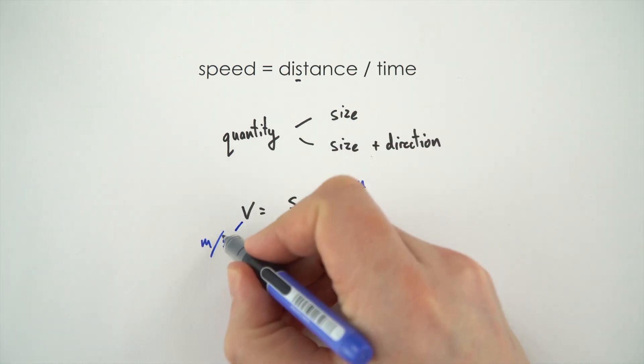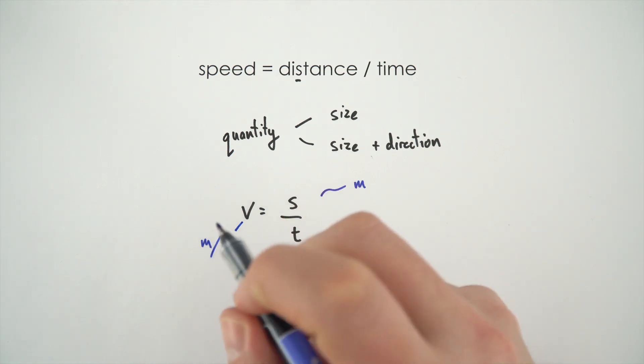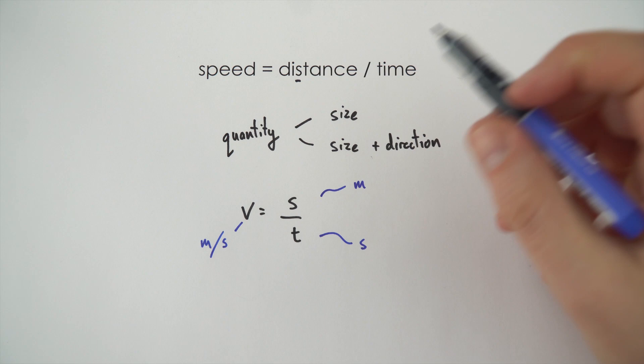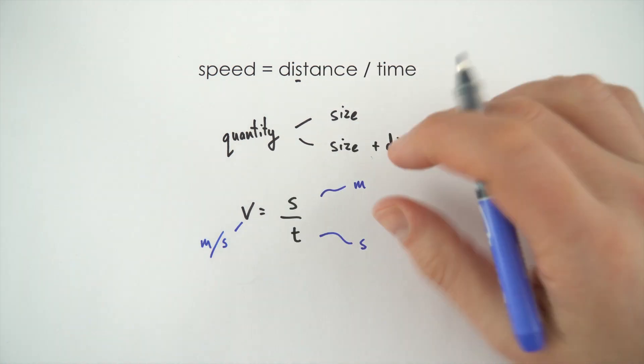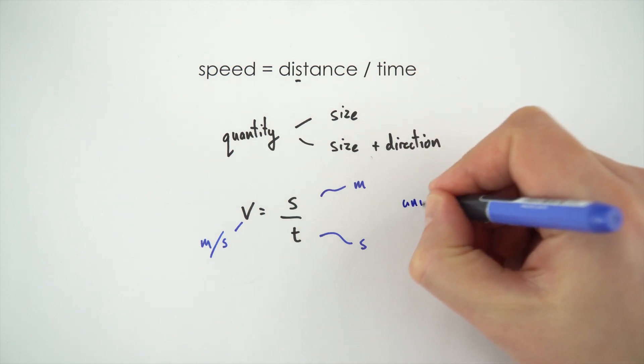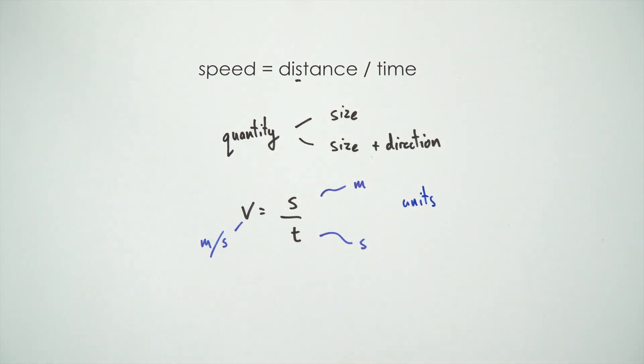And this line here, the kind of slash between M and S, means that we have the amount of meters per second. So that's it, we can represent all of these quantities in physics often with a shorthand symbol, and remember that you always need to make sure that you think about the units that go with each of these.